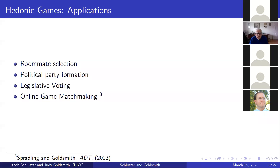Additionally, the preferences that agents have over which coalition they end up in depend entirely upon the coalition they end up in — agents don't care about anything outside of their coalition in terms of the utility they derive. Also complicating many hedonic games is that there are exponentially many ways that agents can be partitioned, so it is intractable to take a brute force approach in most cases. Some applications include roommate selection, the stable marriage problem, political party formation, legislative voting, and online game matchmaking, which was looked at by Matt Spradling and Dr. Goldsmith in a 2013 ADT paper.